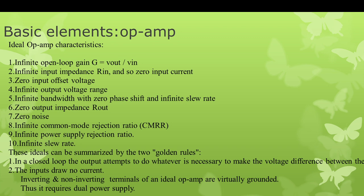The ideal op-amp characteristics include: infinite open-loop gain (output divided by input), zero noise, zero output impedance, infinite input impedance, zero input offset voltage, infinite common-mode rejection ratio, infinite power supply rejection ratio, and infinite slew rate. These are summarized by two golden rules: in a closed loop, the output does whatever is necessary to make the voltage difference between inputs zero; and the inverting and non-inverting terminals draw no current and are virtually grounded. The op-amp does require a dual power supply.